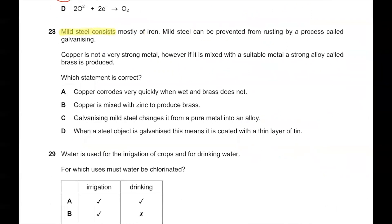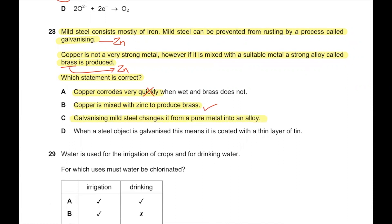Question number 28. Mild steel can be prevented from rusting by galvanizing. Copper mixed with a suitable metal produces an alloy called brass. Copper corrodes very quickly — wrong, copper is very unreactive and below hydrogen in the reactivity series. Copper is mixed with zinc to produce brass — correct. Galvanizing does not convert steel into an alloy; it is just a coating. Galvanizing means coating with zinc, not tin. So B is the correct answer.